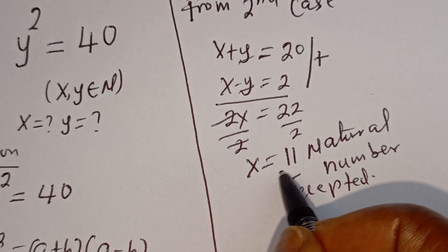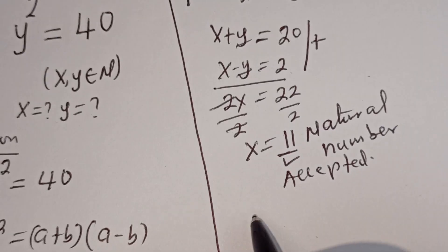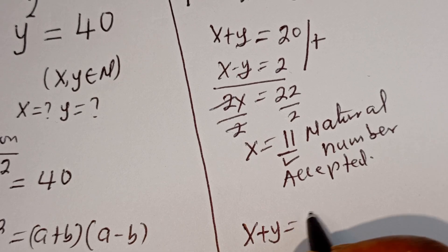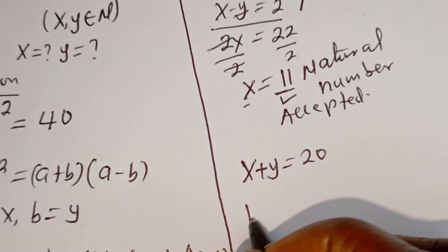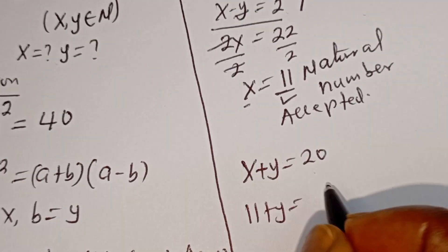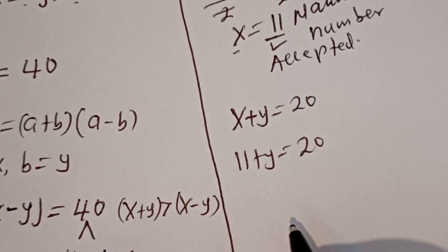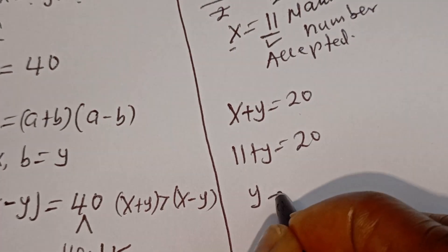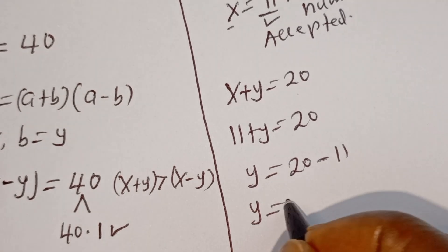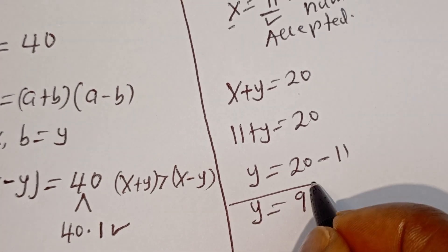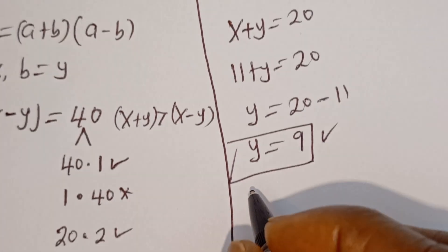We have the value of x. Now let's solve for y. From x plus y equals 20, when x is 11, we have 11 plus y equals 20, so y equals 9. This is the value of y, which is also a natural number.